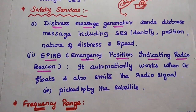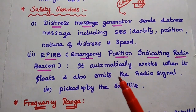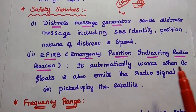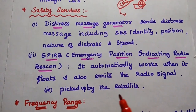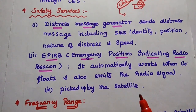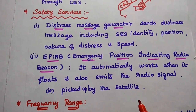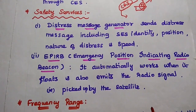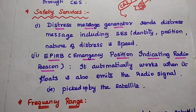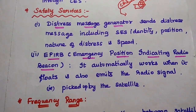The next device is EPIRB — Emergency Position Indicating Radio Beacon. It automatically activates when it enters the water, and emits a radio signal that is picked up by the satellite, which then provides that information to the CES and the coastal areas to take immediate action.